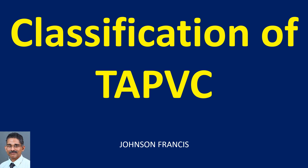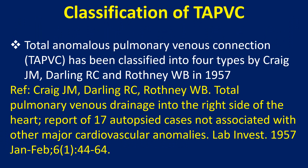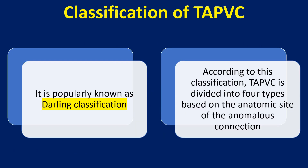Discussion of different types of classifications of TAPVC. Total anomalous pulmonary venous connection has been classified into four types by Craig, Darling and Rothney in 1957. It is popularly known as the Darling classification.